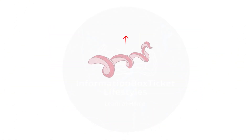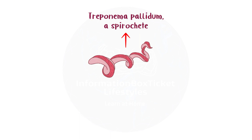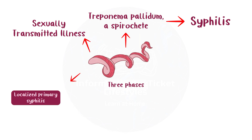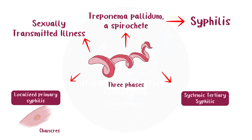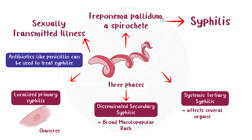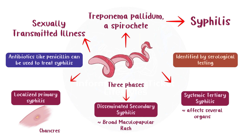To quickly review: Treponema pallidum, a spirochete, is the cause of syphilis, a sexually transmitted illness. Three phases of the illness can result from it. The first is localized primary syphilis, which causes hard chancres. The second type is disseminated secondary syphilis, which causes a broad maculopapular rash. The third type is systemic tertiary syphilis, which affects several organs. Syphilis can be identified by serological testing and treated with antibiotics like penicillin.